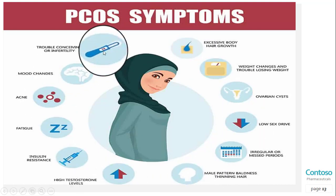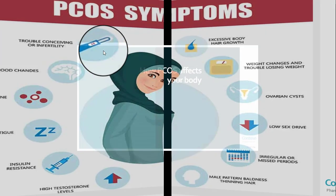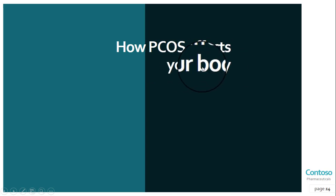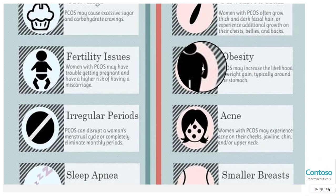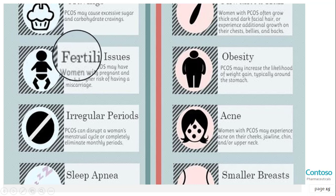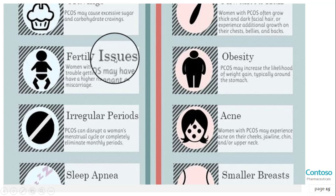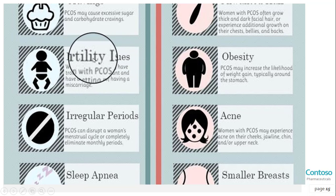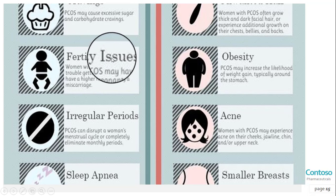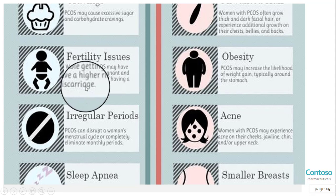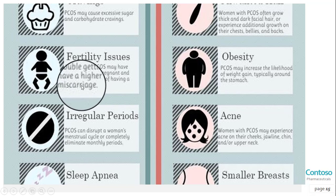Now let's discuss how PCOD affects your body. Higher than normal androgen levels can affect fertility and other aspects of health. The first effect is infertility — to get pregnant you have to ovulate, and women who don't ovulate regularly don't release as many eggs to be fertilized. PCOS is one of the leading factors causing infertility in women, meaning an inability to conceive.